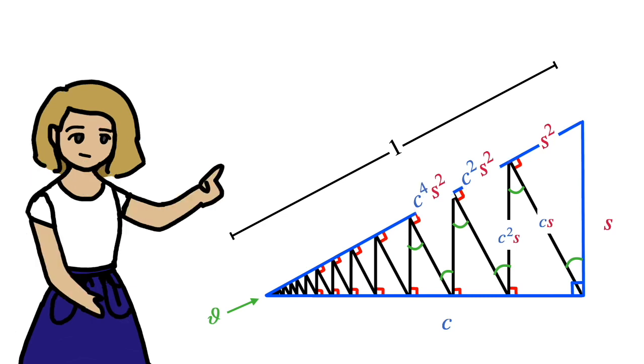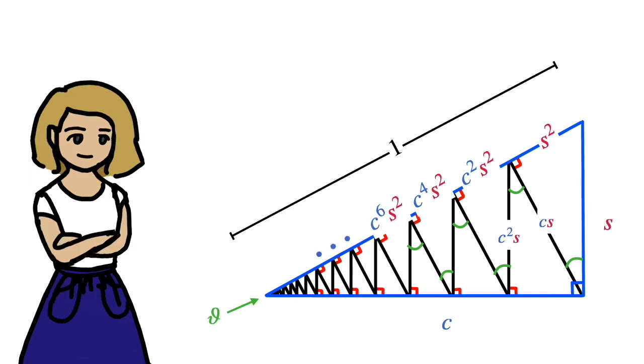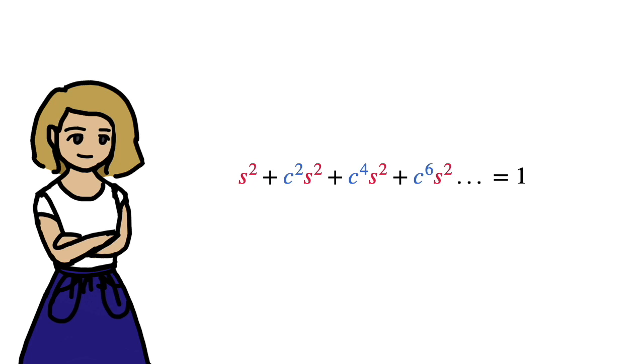Continuing on, we find that the next lengths are c to the 4 s squared, c to the 6 s squared, and so on. And focusing just on the hypotenuse, we have the infinite series s squared plus c squared s squared plus c to the 4 s squared plus c to the 6 s squared, etc equals 1.